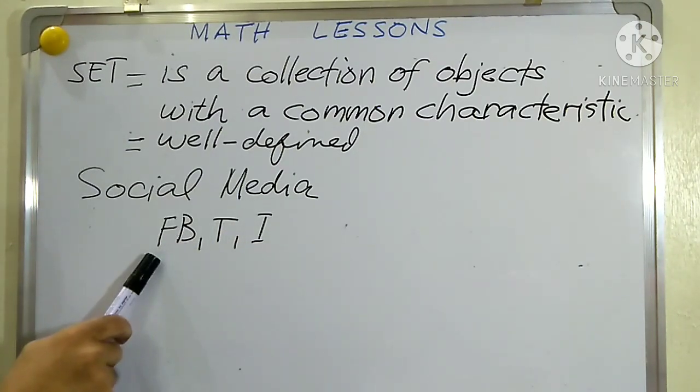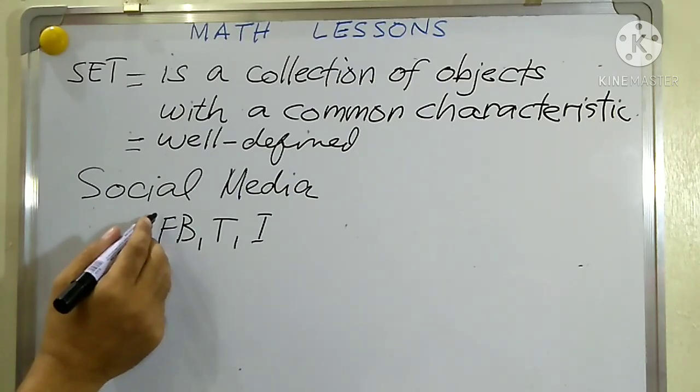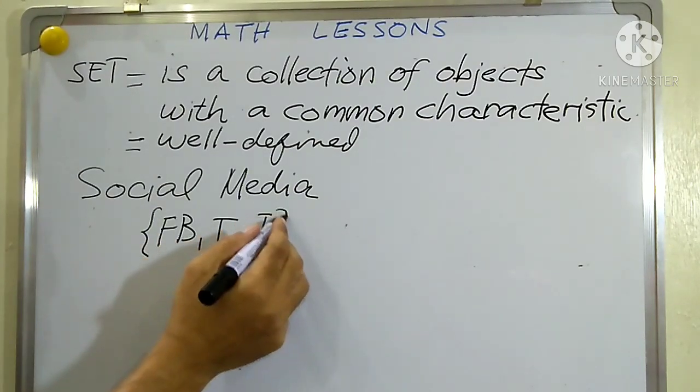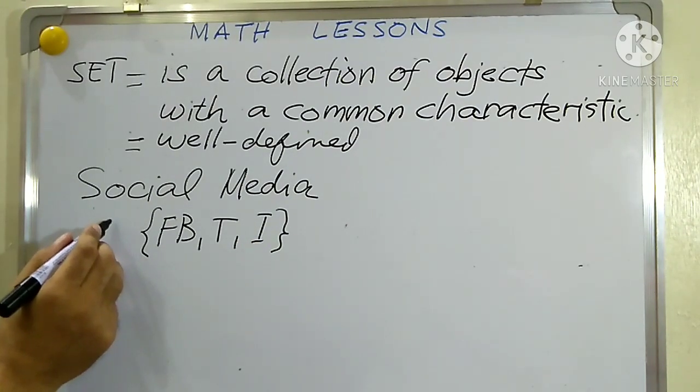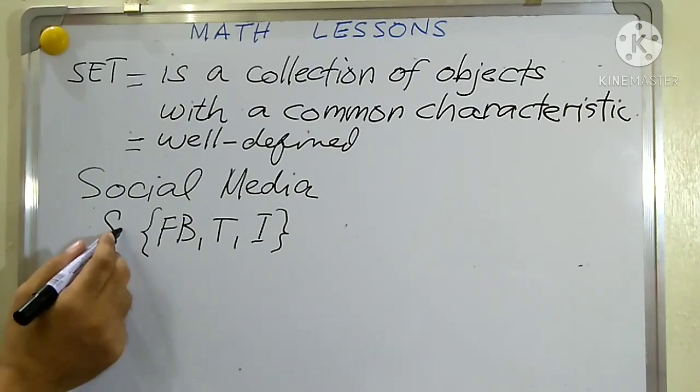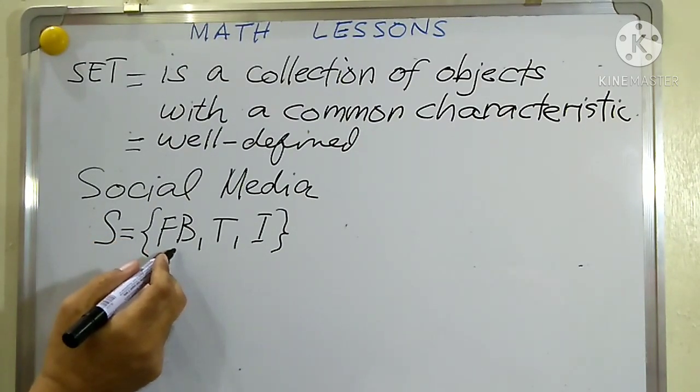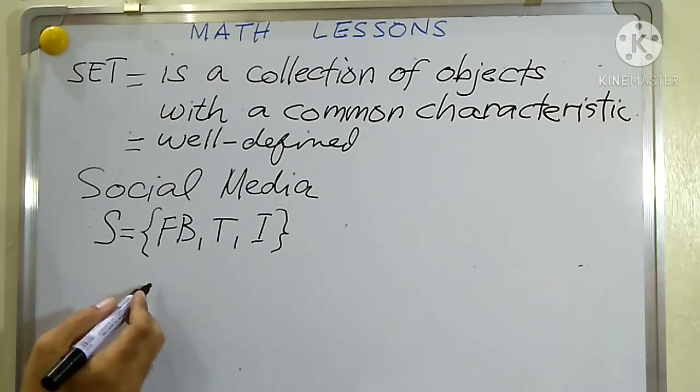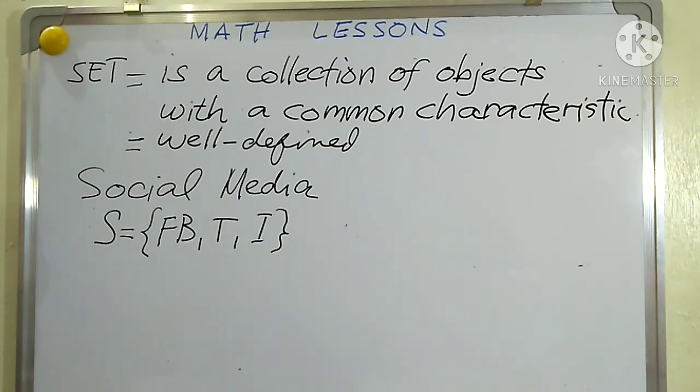Let us name a set using the letters of the alphabet. Say we call this set S whose elements are Facebook, Twitter, and Instagram. This is how to write a set: you write the letter, the equal symbol, and also the braces.